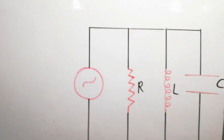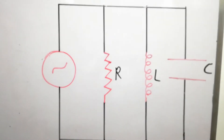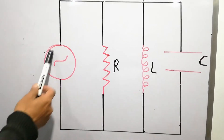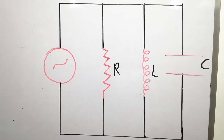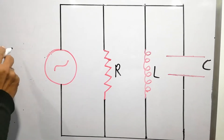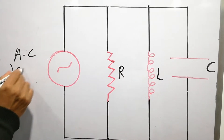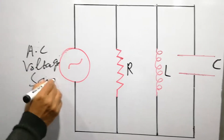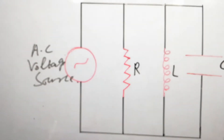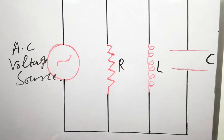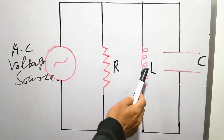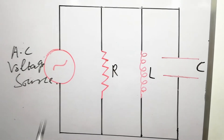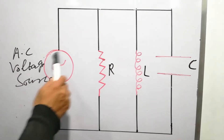Let's look at the diagram. We have four components: an AC voltage source with variable frequency, and then we have the resistor, inductor, and capacitor. They are connected in parallel with the AC voltage source.